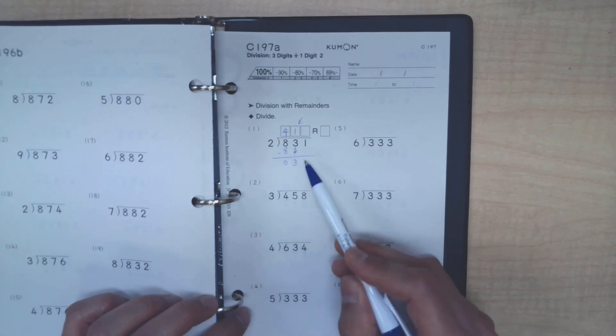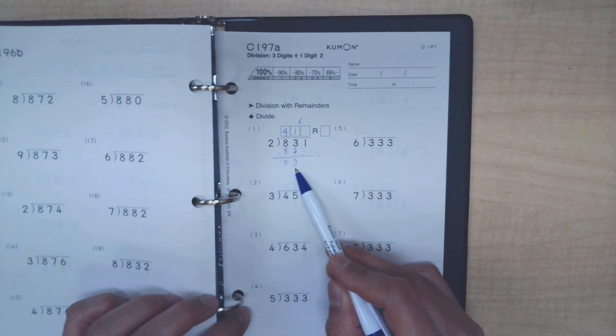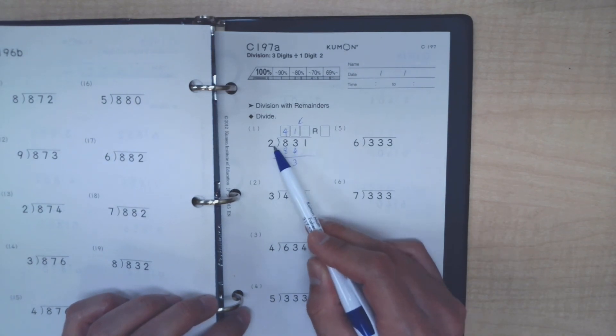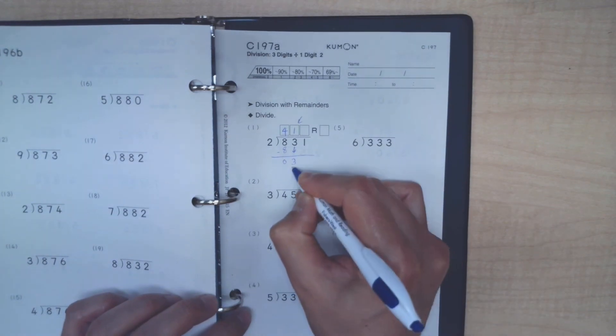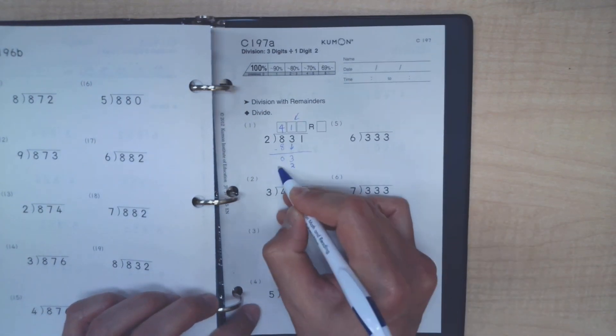So 2 times 2 would make our number go over the 3, so we would have to remain at 1. 2 times 1 is 2.